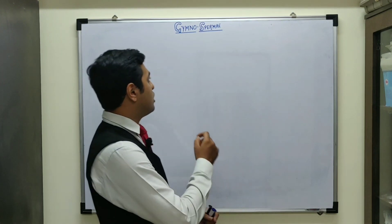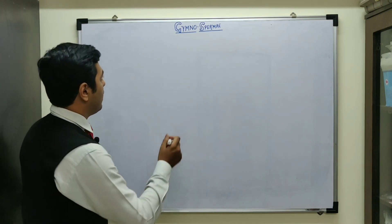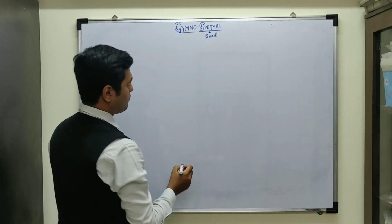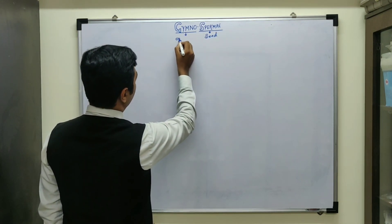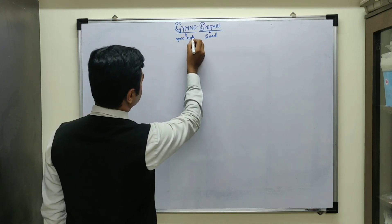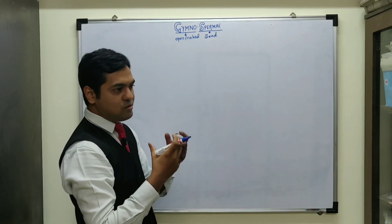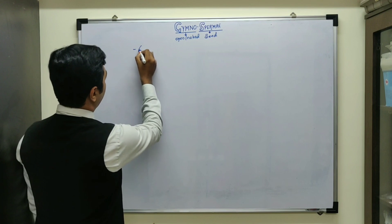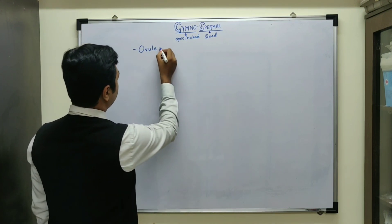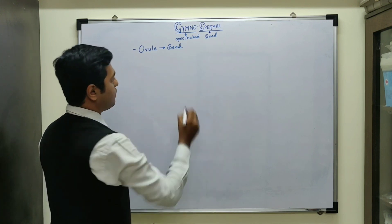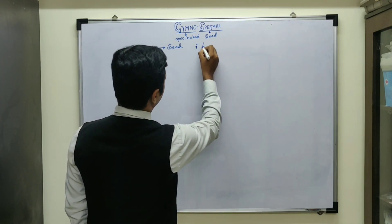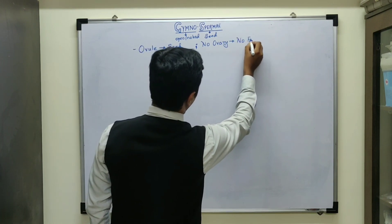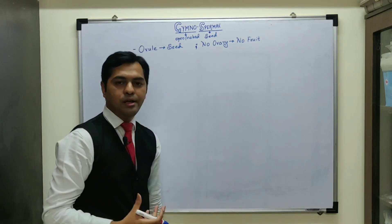Coming to division Gymnosperme — as the name suggests, sperma means this is a seed-producing plant and gymno means open or naked seeds. The reason for that is in gymnosperme plants there is no formation of fruit, because they have only ovule present in the plant body which transforms into seed after fertilization. Since there is no presence of ovary, there is no fruit formation in plants belonging to Gymnosperme.